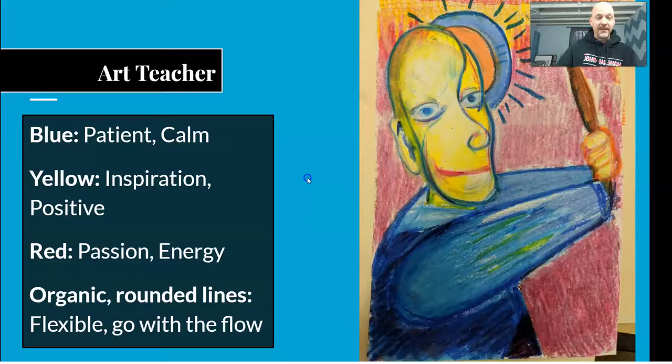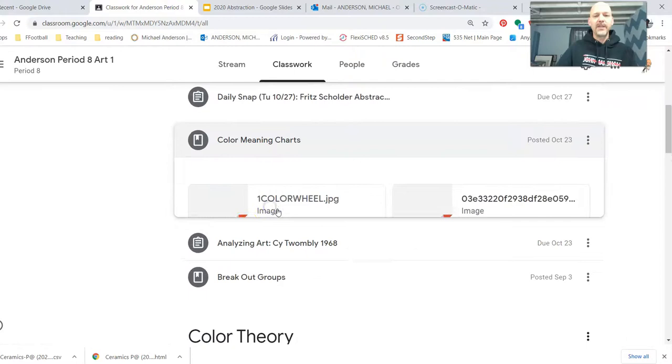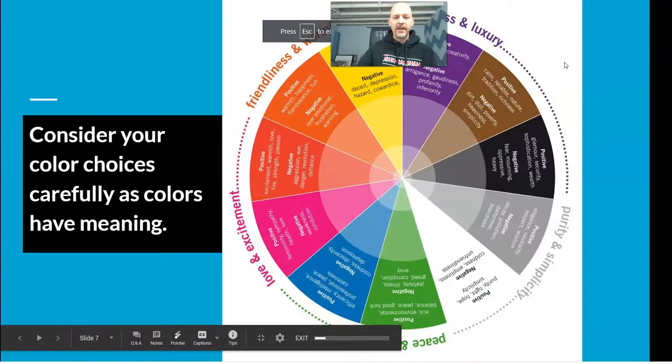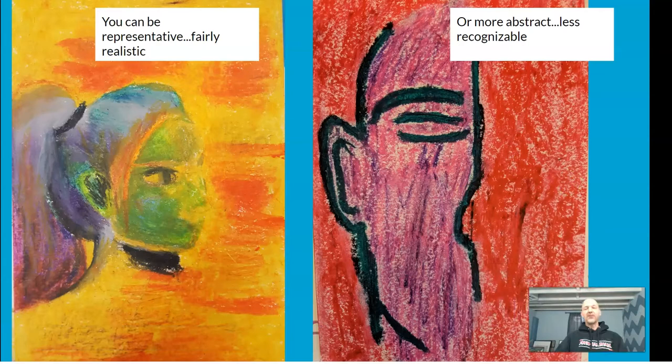There are color meaning charts on Google Classroom — actually three of them — where you can find the colors you want to use. So if I am calm, I'll bring in some blue. I'm creative, so I'll bring in some yellow. Positive — I'm going to need some yellow. You can use those resources to match your qualities to colors.